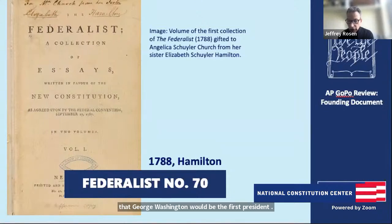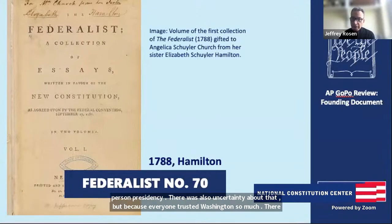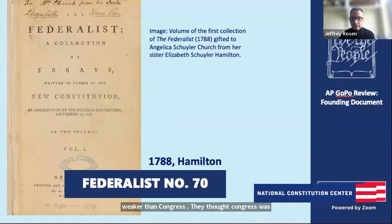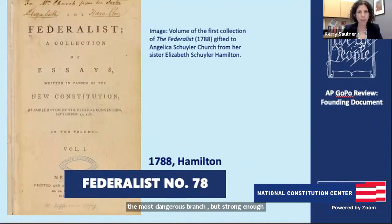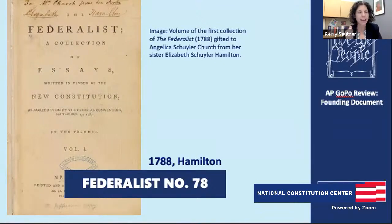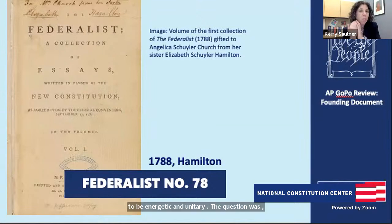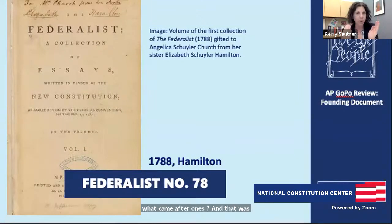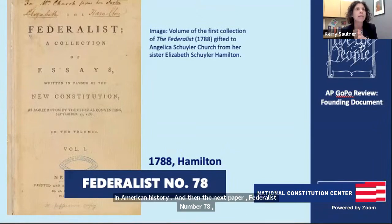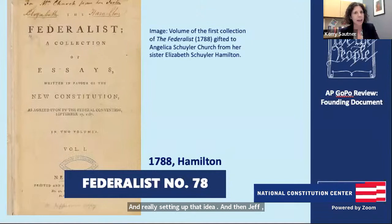Congress was considered the most dangerous branch, but the executive was strong enough to be energetic and unitary. The question was what came after Washington — and that's what led to many great debates in American history. Then Federalist 78 really talks about the need for an independent judiciary. Jeff, can you talk about why this was so important to the founding generation, and what makes the judiciary independent?